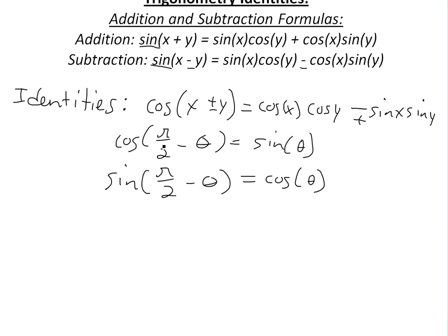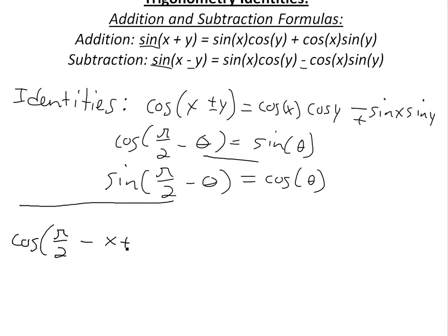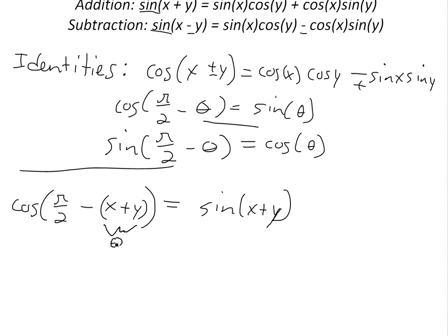So now to prove this, we rewrite sine of x plus y as cosine of pi over two minus x plus y in brackets, so that this equals sine of x plus y. If we let x plus y equal theta, that's just using the identity we showed: cos(π/2 − θ) = sin θ.